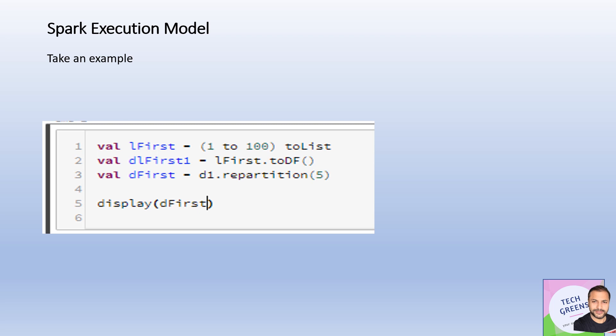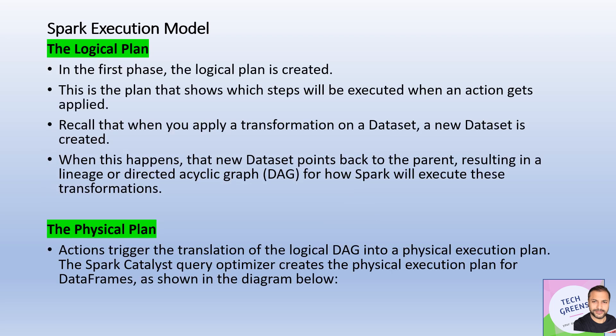Let's run through an example. I've created a small DataFrame of 100 integer values. Without repartitioning, my machine shows 32 partitions. I then repartition it into five. To understand the execution model for this job, I use the command `explain(true)`, which gives all the plans. Plans are categorized into two: the logical plan and the physical plan.